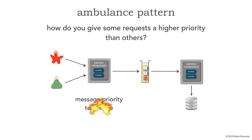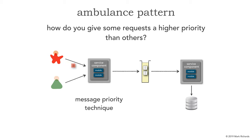Let me show you why this is not a good technique. We get normal messages coming through, but now we get some high priority messages coming in. Because those are set to high priority, they will always go to the head of the queue and slow down or even stop any other messages from being processed, especially if we're waiting for a response from those messages.